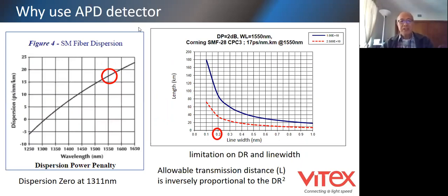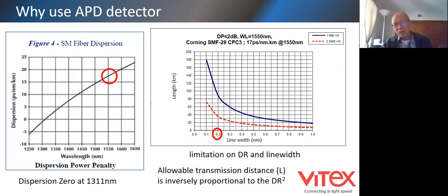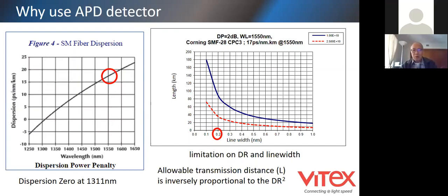To start with, I want to confirm the necessity of using APD. APD has become part of our tools in designing fiber optic links, basically because the allowable transmission distance is inversely proportional to the bit rate squared. I plot this out with a graph on the right side using typical fiber and laser characteristics. The blue line is a 10G signal and the red line is 25G.